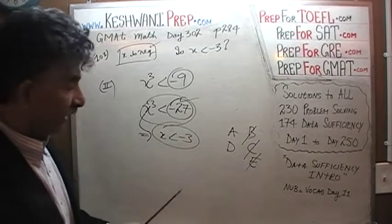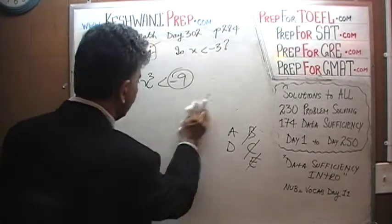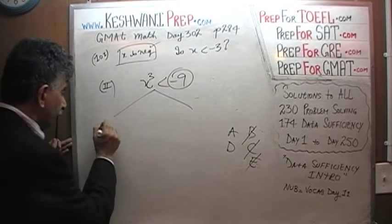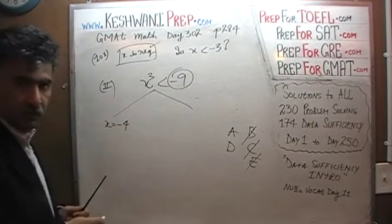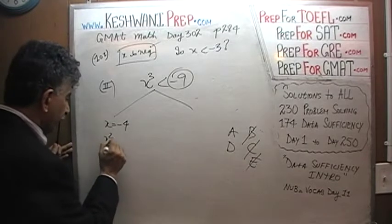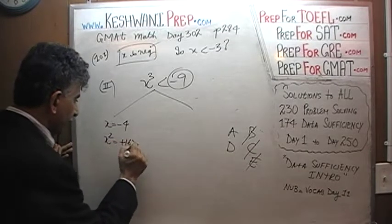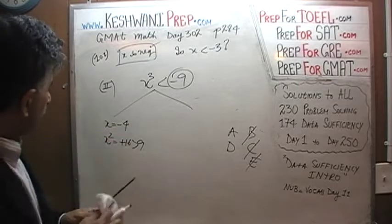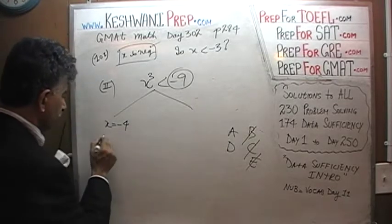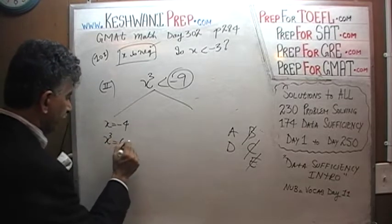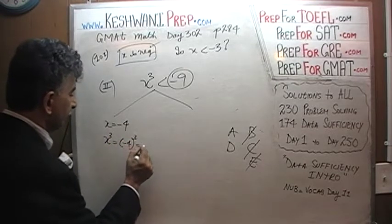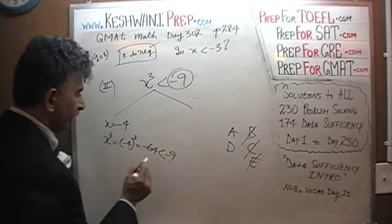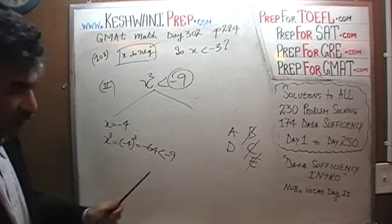Here are a couple of situations. For example, X could be negative 4. In which case, the cube of X would be negative 4 cubed, which is negative 64, which is less than negative 9. So negative 4 satisfies X cubed less than negative 9.